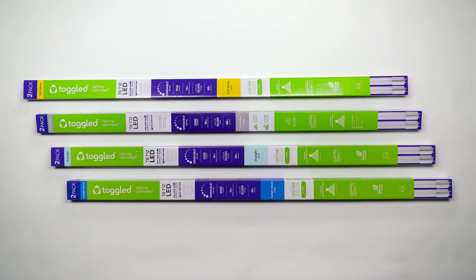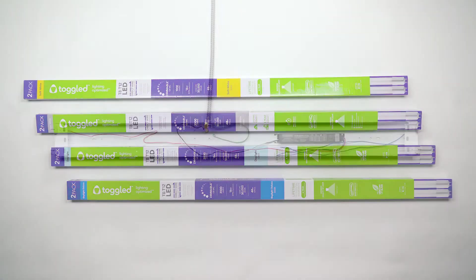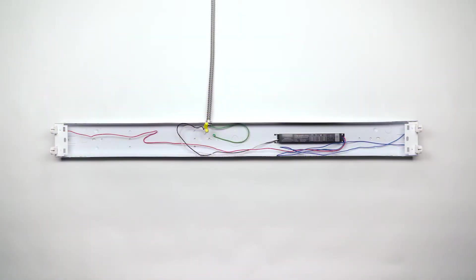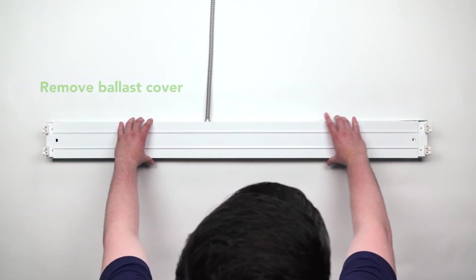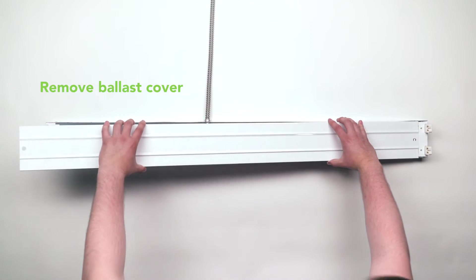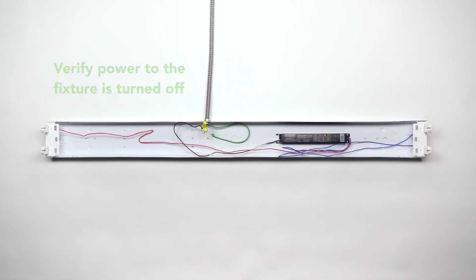Once you've confirmed that your selected toggled direct wire LED tubes are compatible with your fixture, start by turning off power to the fixture at the breaker. Remove the ballast cover inside the fixture. Use a voltmeter or non-contact voltage tester to verify that the power to the fixture is turned off.